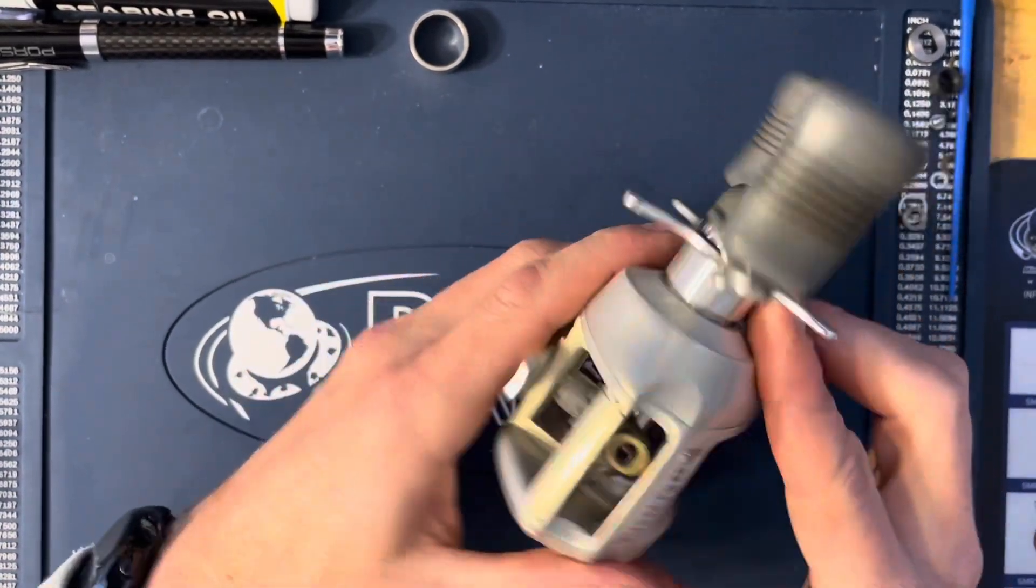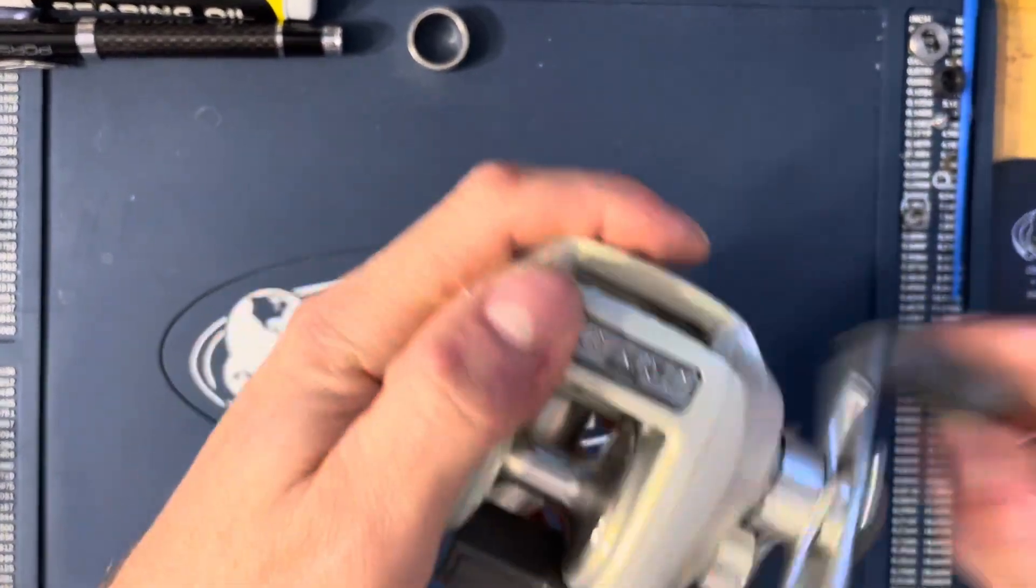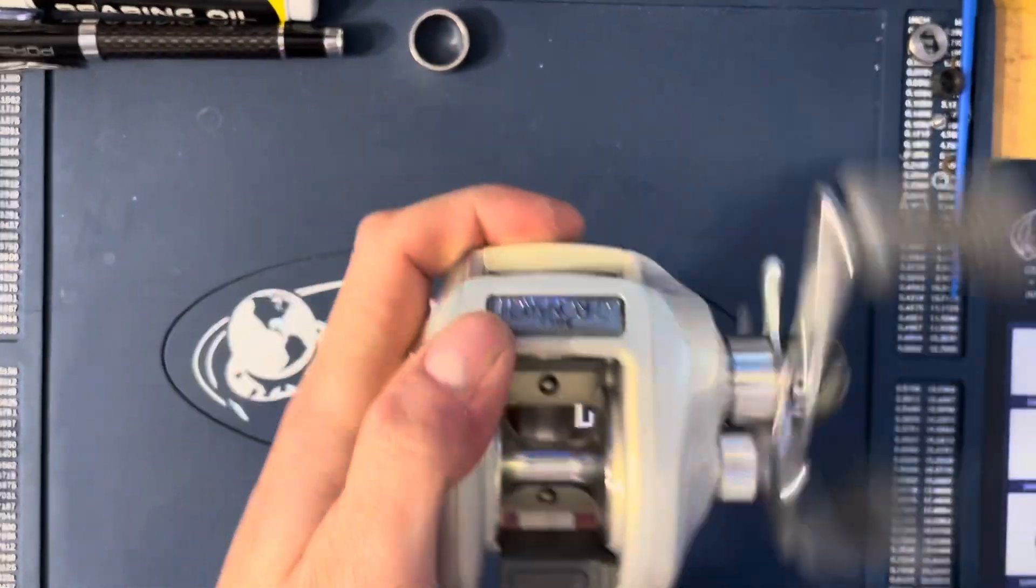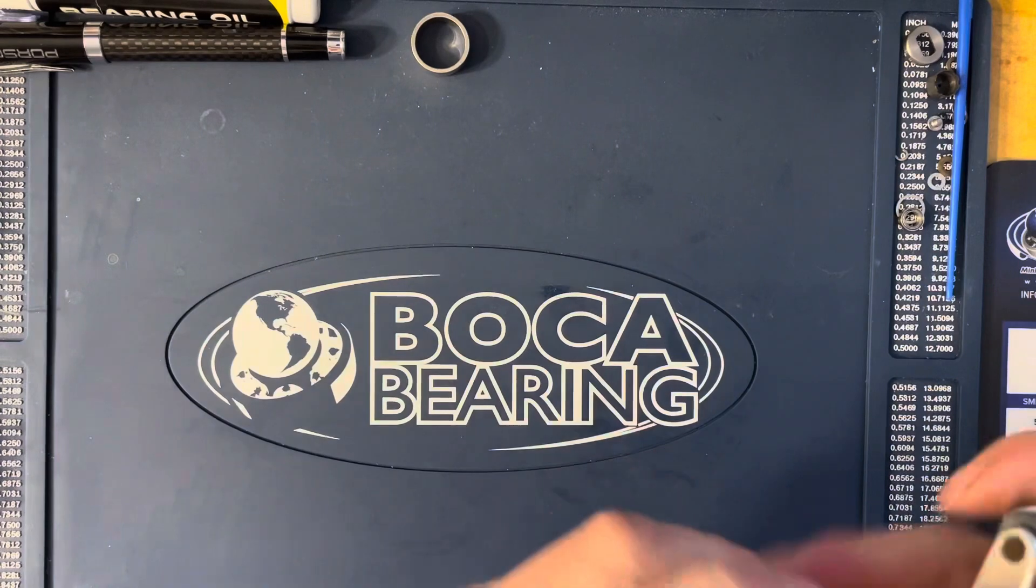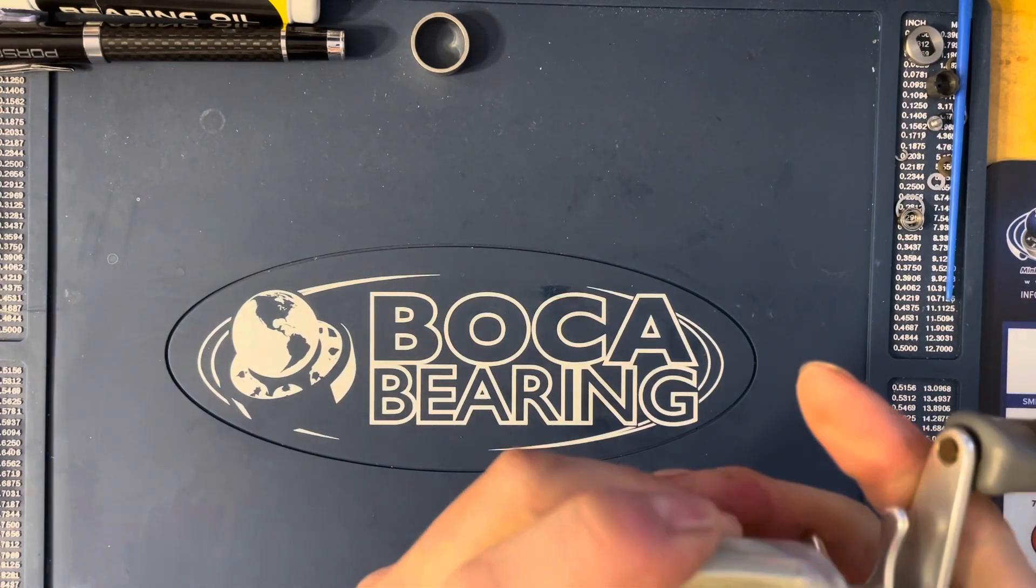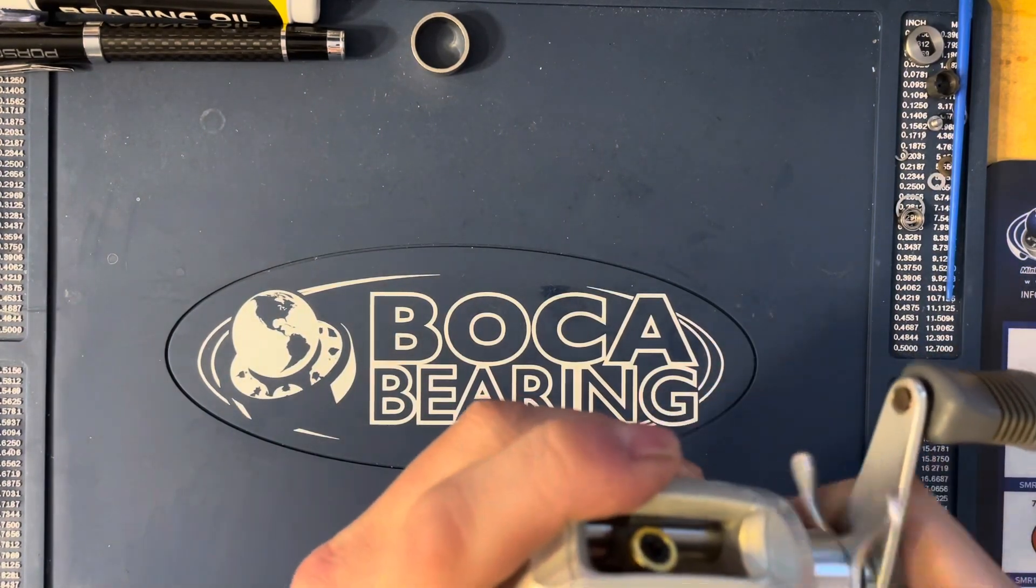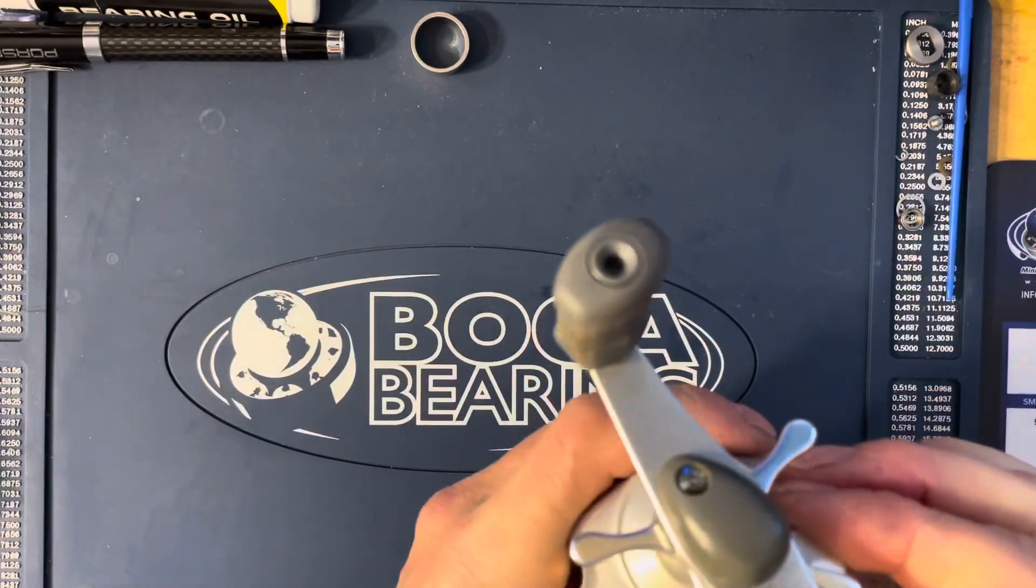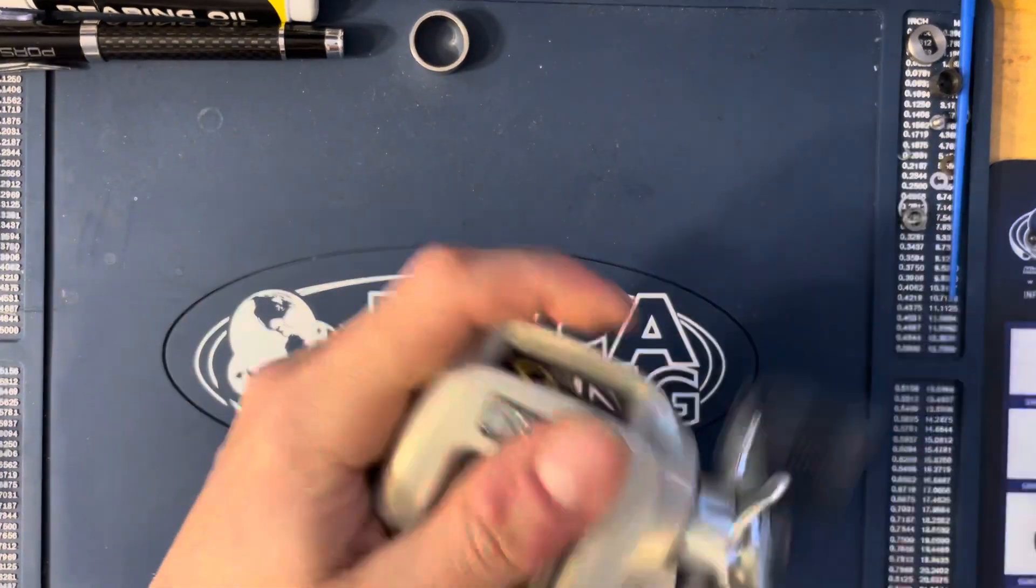I mean this thing is extremely smooth. Brass gear, pinion gear, clicking drag star. This does not click, this is just a normal tension knob.